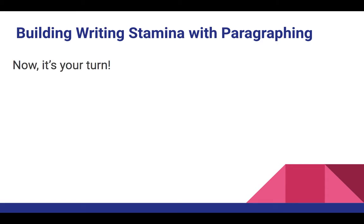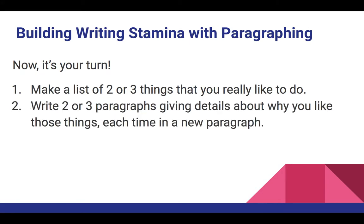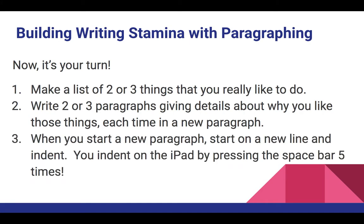Now it is your turn. You are going to start by making a list of two or three things that you really like to do. This can be found on Seesaw. Once you have that list, you are going to write two or three paragraphs giving details about why you like those things, each in a new paragraph. When you start a new paragraph, start a new line and indent. You will need to indent on the iPad by pressing the space bar five times.